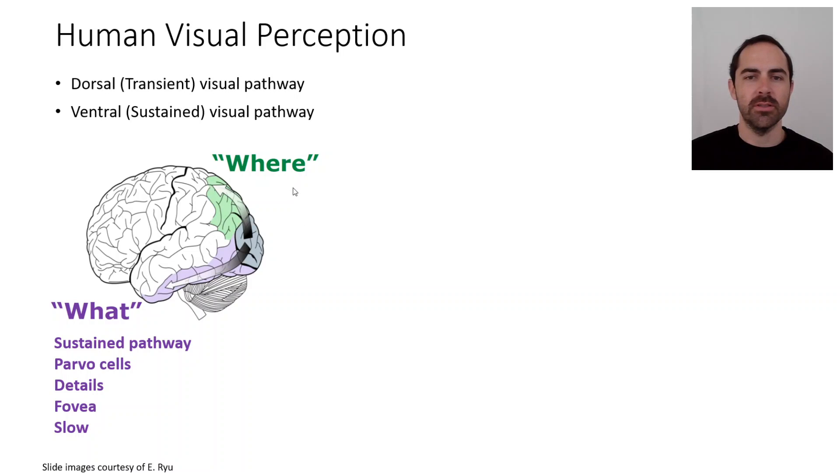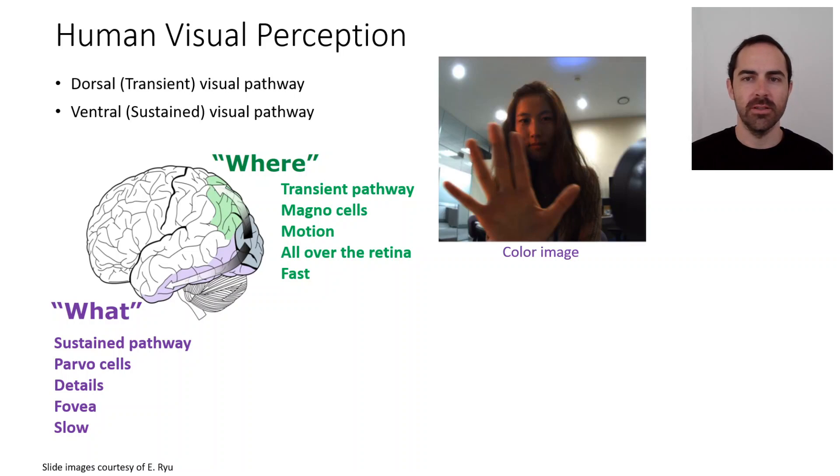The other pathway is called the where pathway, also called transient pathway. It comprises the magno cells and is in charge of detecting motion from photoreceptors all over the retina and it's fast.